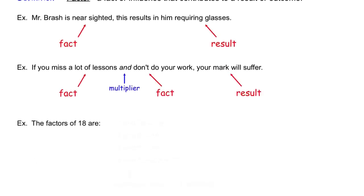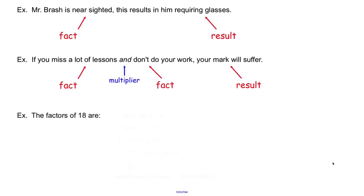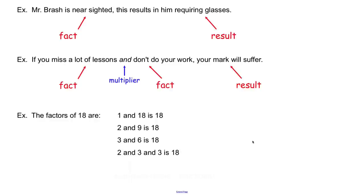The factors of 18 — what are they? They're pretty straightforward: 1 and 18, 2 and 9, 3 and 6. They all multiply to 18. You don't necessarily only have 2 factors — we see that 2 times 3 times 3 is also 18. You can have a whole multitude of factors.